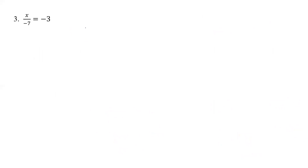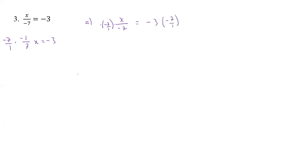Here's another one: x over negative 7 equals negative 3. This is really negative 1 seventh x equals negative 3. So if we multiply by negative 7 over 1, that will get rid of the fraction. We multiply both sides by negative 7 over 1. Those cancel and become ones, and we have a negative times a negative, so it's positive. Our final answer is x equals 21.